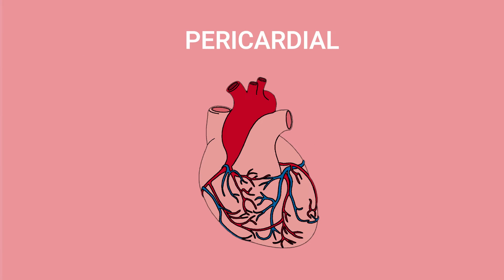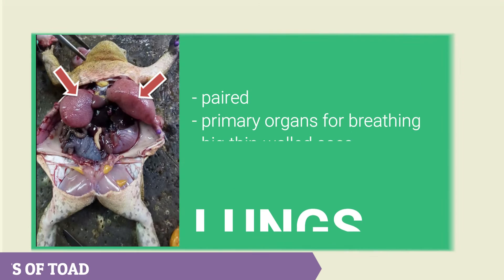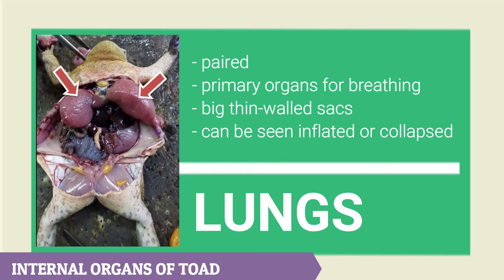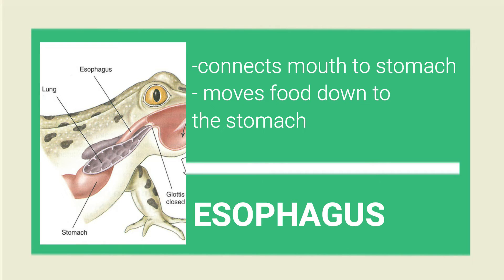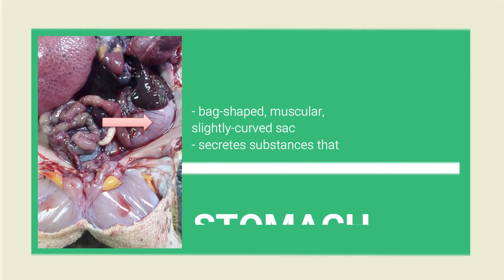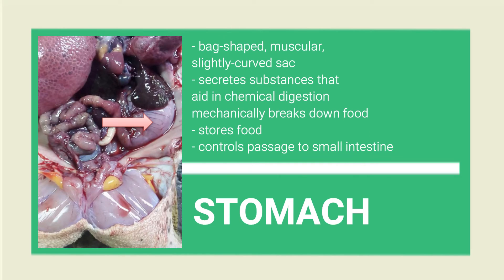The pericardial cavity at the thoracic region holds the heart. Let's start with the lungs, the respiratory organs of the toad. The esophagus connects the pharynx to the stomach in order for food to move from the mouth to the stomach. The stomach is where food is broken down. It is attached to the dorsal body wall by its mesentery, the mesogaster. The region of the stomach which joins the esophagus is the cardiac region, the narrower portion is the pyloric region, and the part that joins with the intestine is the pylorus. Within that is the pyloric valve or pyloric sphincter. When cutting into the stomach, you can see the rugae or the longitudinal folds.